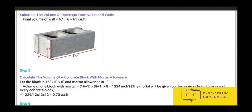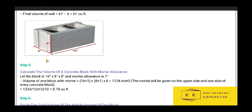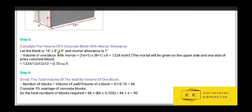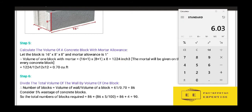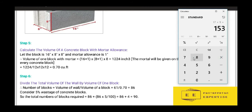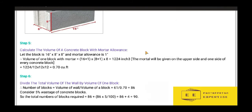Step 5: calculate the volume of one concrete block. The block is 16 inches in length, 8 inches in height, and 8 inches in width. Adding mortar allowance of 1 inch to each side, the effective dimensions become 17 × 9 × 8 inches. Calculating the volume: 17 × 9 × 8 gives us 1224 cubic inches.